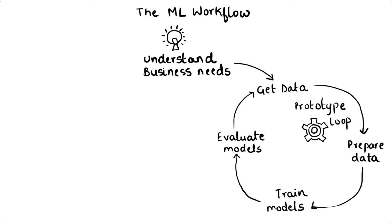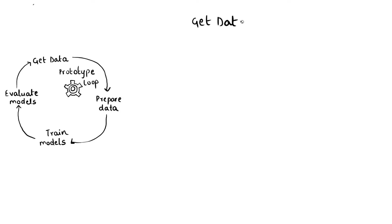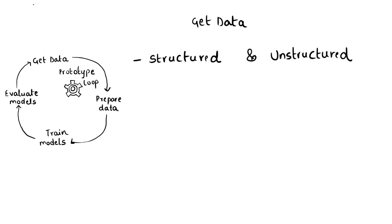The first step to solving a machine learning problem is accessing data. Typically, data scientists obtain data by querying the databases where the company stores their data. This can also include unstructured data sets that do not fit well into a relational database, such as logs, raw text, images, and videos. These data sets, once identified, are heavily processed via ETL pipelines — extract, transform, and load pipelines — written by data engineers and data scientists. The data sets either reside in a data lake or in a database.